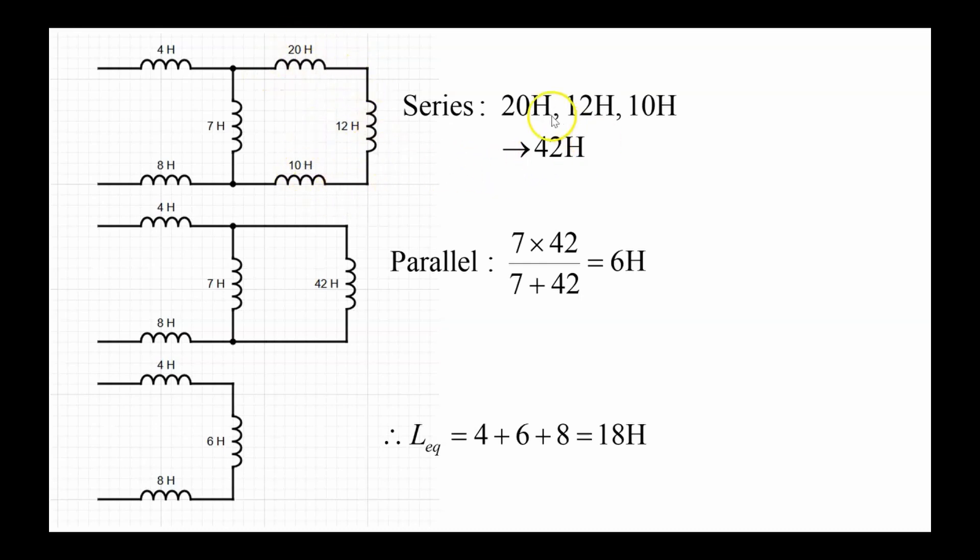20 plus 12 plus 10 is equal to 42 Henrys. I can replace these three inductors with a single equivalent inductor of 42 Henrys. Next, I notice that the 7 Henry and the 42 Henry inductors are in a parallel combination.